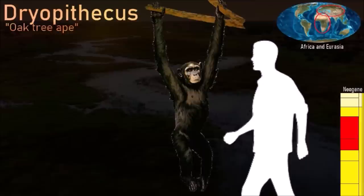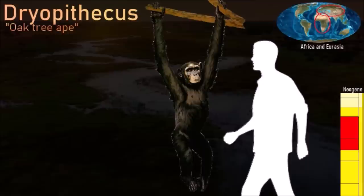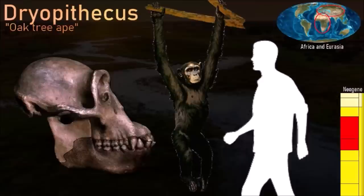Dryopithecus was an ape the size of a monkey with a build like a chimpanzee. Its body proportions and the shape of its limbs and wrists show that it could walk on all fours like a chimpanzee. The limbs also suggested that it spent most of its life in trees, swinging like a gibbon. Dryopithecus had molars with thin enamel, suggesting it ate soft fruit, and the same pattern of cusps as the great apes and hominids.